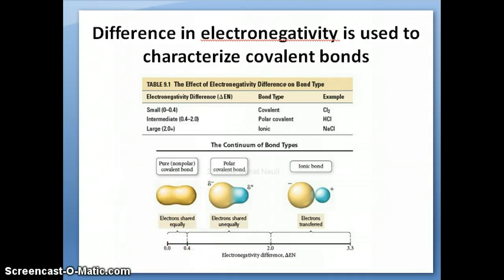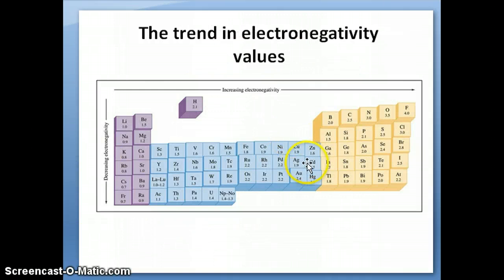So what's an example of a nonpolar bond? Well, you just find something that has a difference of about 0.4 or less. So for example, if you look at carbon-hydrogen bond, that's one that you'll see very often. Carbon is 2.5 electronegativity, hydrogen is 2.1. The difference is exactly 0.4. So it's right at the borderline there between polar and nonpolar. Usually we would consider that to be a nonpolar bond generally speaking.